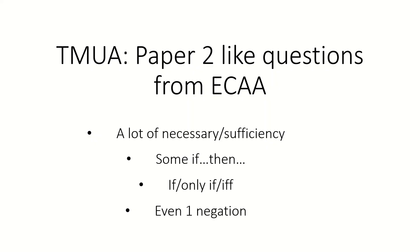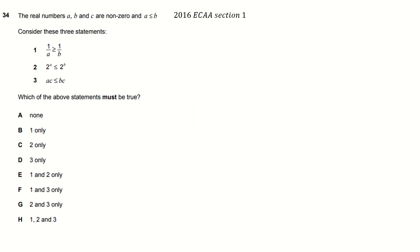There are some good extra questions here to practice. I suggest you have a go at these before I do each one. Questions like 'which must be true' — that's asking about which are necessary, isn't it? So, which of these things are necessary if you have this? We've got two numbers, A is less than or equal to B. Counterexamples is the theme of the day.